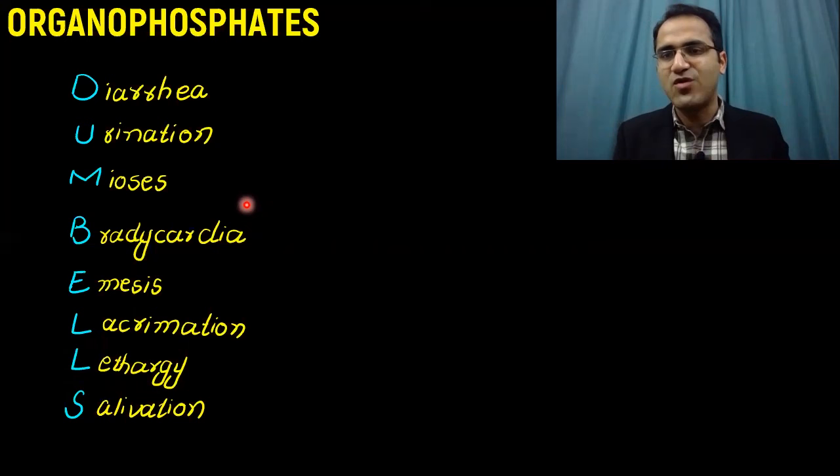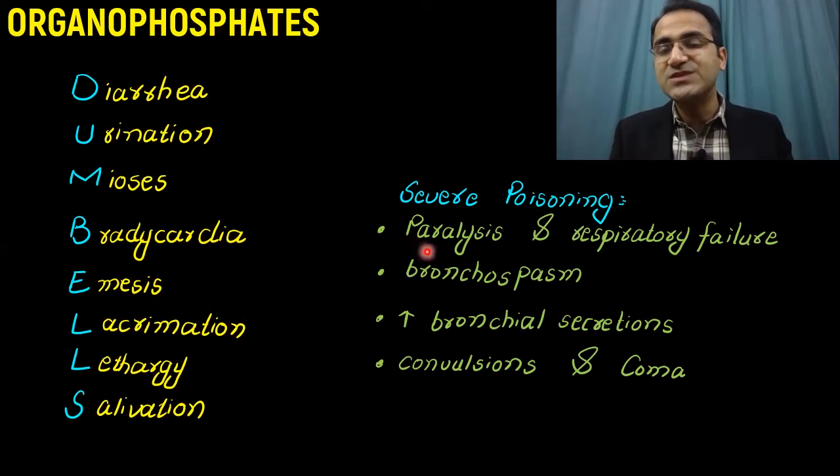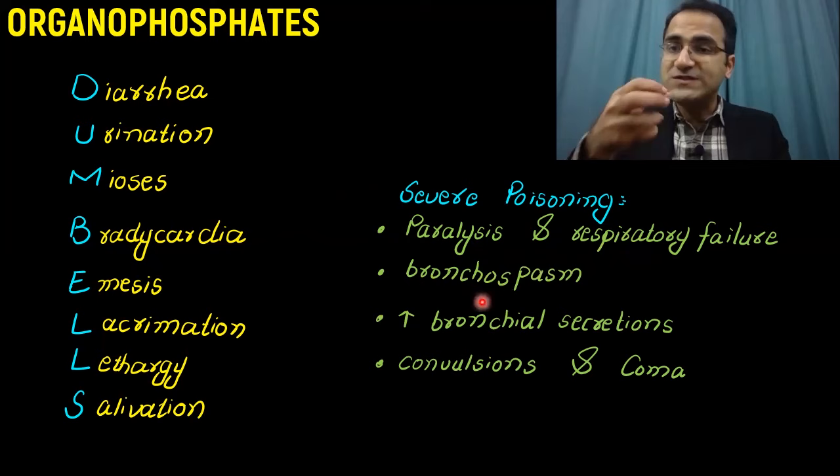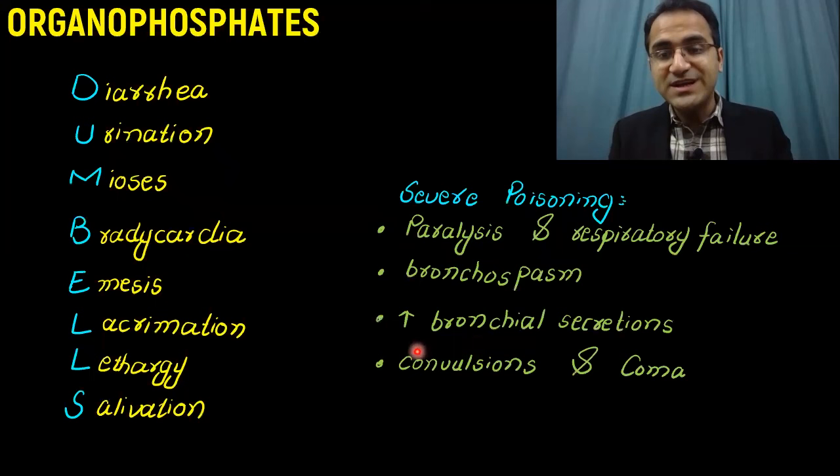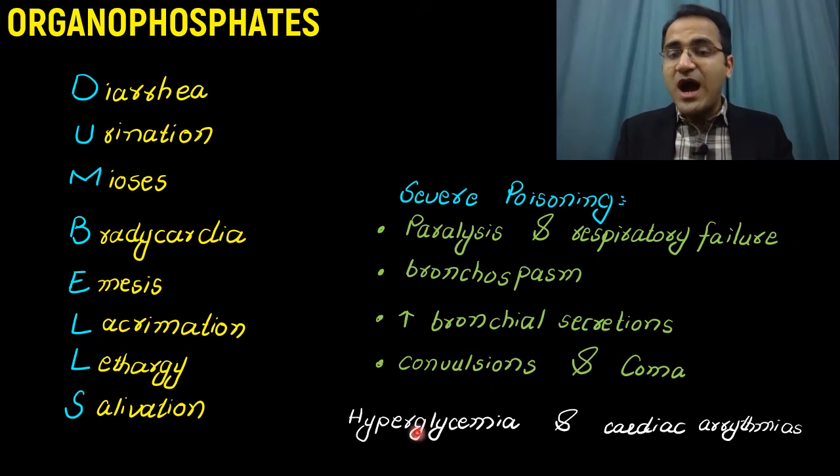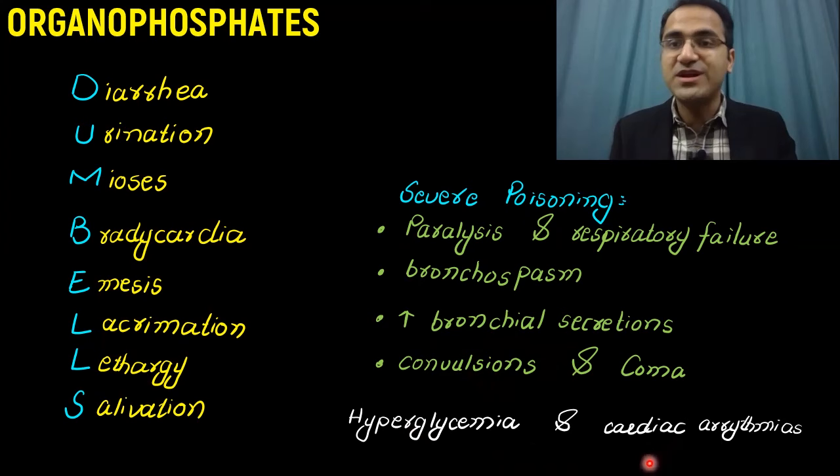In severe cases, the patient would be having paralysis, respiratory failure, bronchospasm, and increased bronchial secretions. These are all the actions of parasympathetic nervous system. In few severe cases, you might be able to see convulsions and coma in patient. Hyperglycemia and cardiac arrhythmias are also seen in severe cases of organophosphate poisoning.